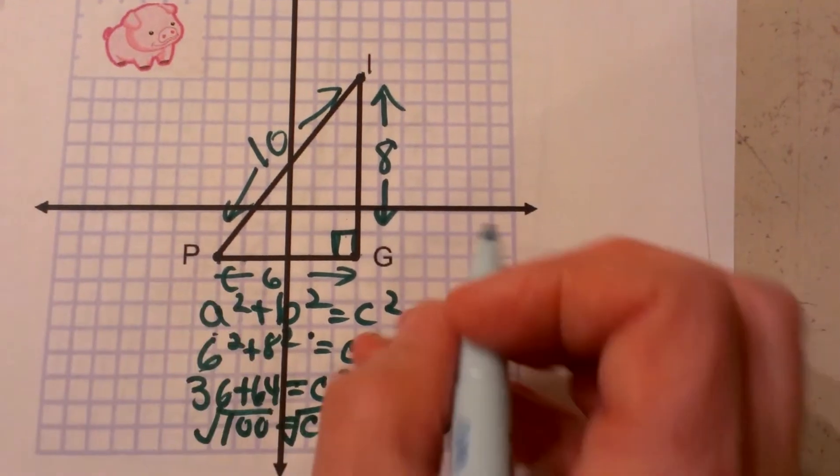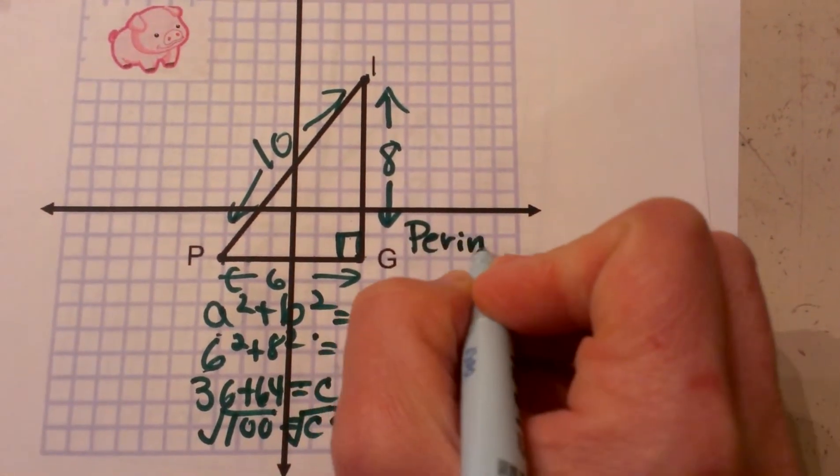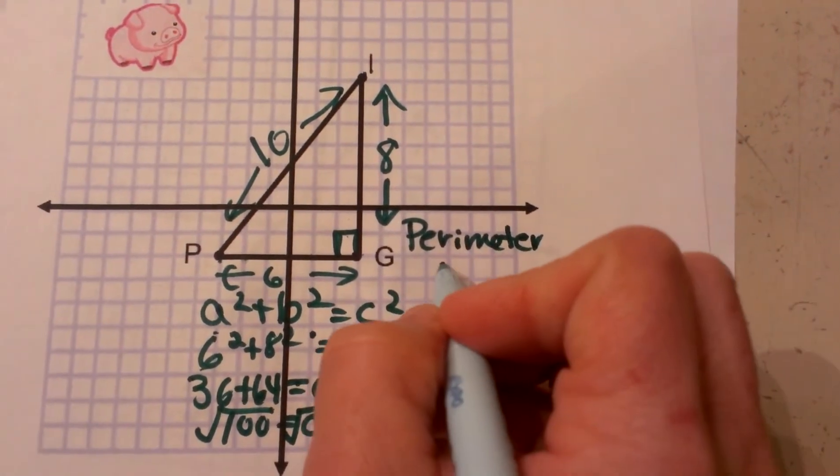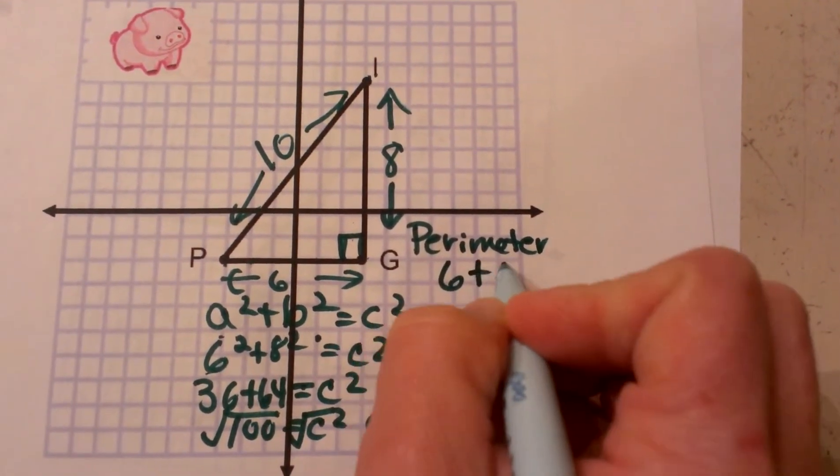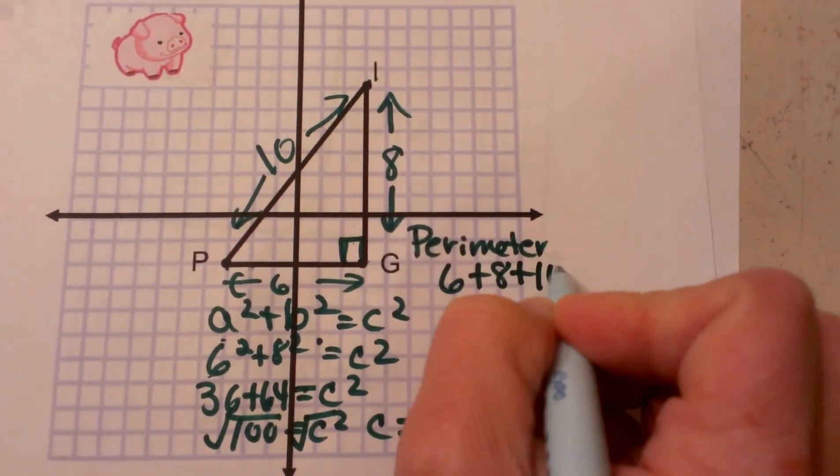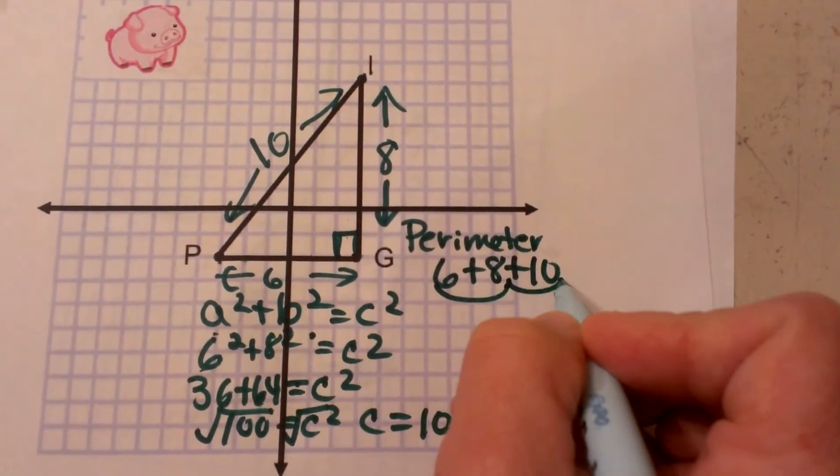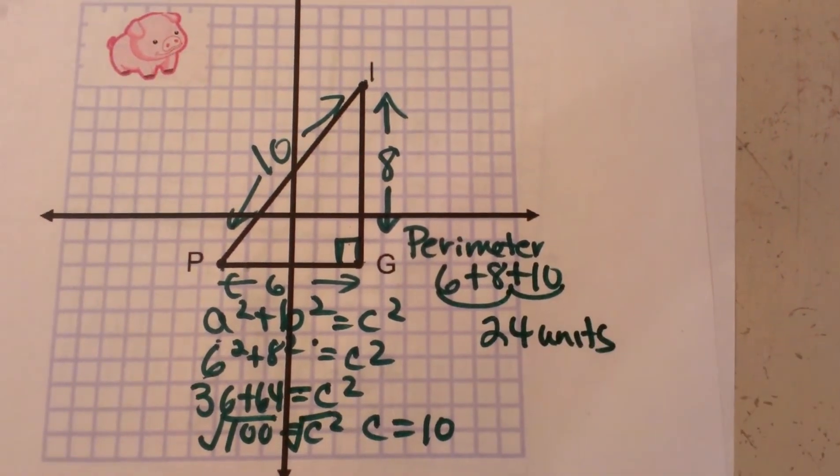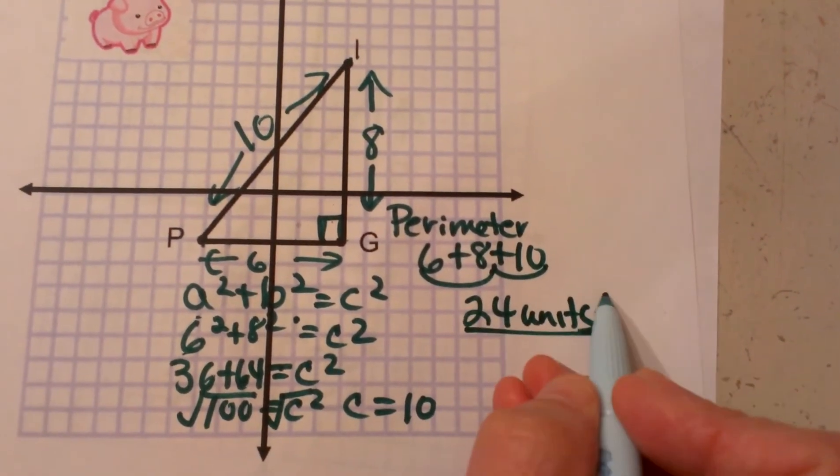Now if we need to find the perimeter, how do you find the perimeter of any triangle? Well, you add the three sides. So I'm going to take 6 plus 8 plus 10. 6 and 8 is 14 plus 10 is 24. So that means the perimeter of the triangle is 24 units long.